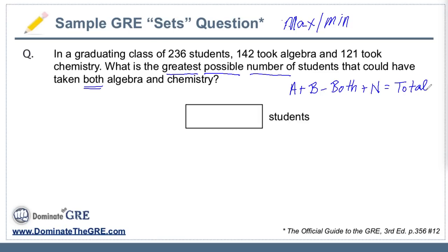This problem would be super easy if all we had to do was solve for both. We're told that 142 students took algebra, 121 took chemistry. If the problem had given us neither, we could set the whole thing equal to 236 students and quickly solve for both.